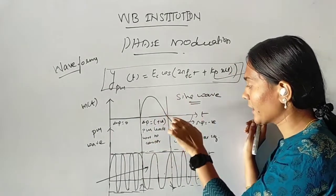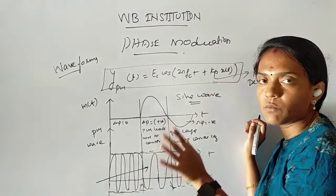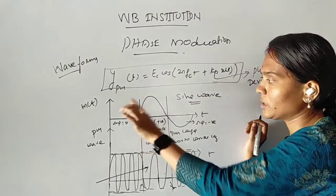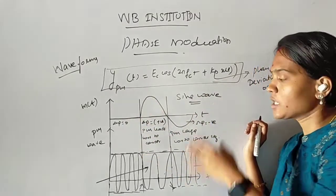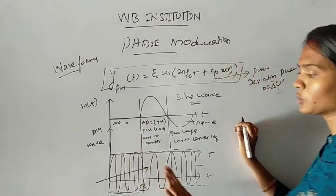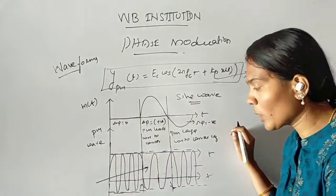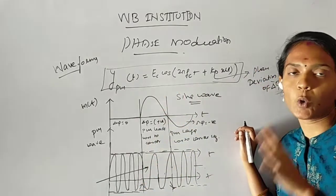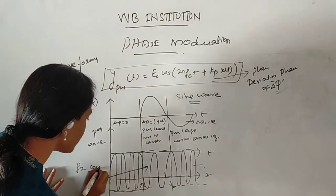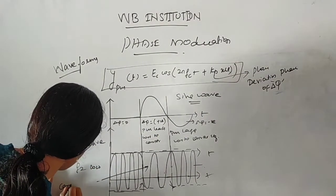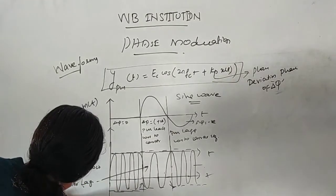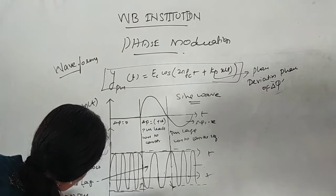When Δφ is positive, the PM wave leads with respect to the carrier signal. When Δφ is negative, the PM wave lags with respect to the carrier signal. When Δφ is negative, the frequency is low — the carrier signal lags with respect to the PM wave.